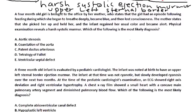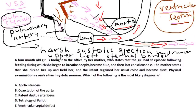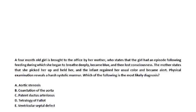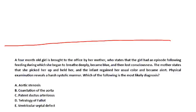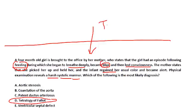Now let's finish with some clinical vignettes to show what kind of questions you'll have on a licensing exam. A four-month-old girl is brought to the office by her mother, who states the girl had an episode following feeding during which she began to breathe deeply, became blue, and then lost consciousness. The infant regained her usual color when picked up. Physical exam reveals a harsh systolic murmur. What is the most likely diagnosis? — Well, the child turned blue while being fed. That's the Tet spell.